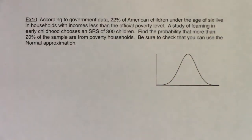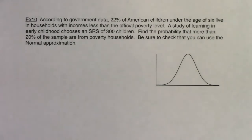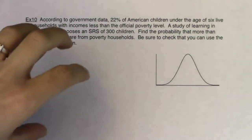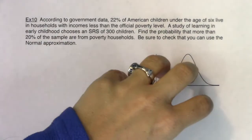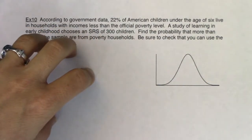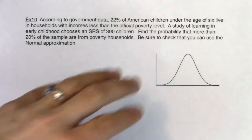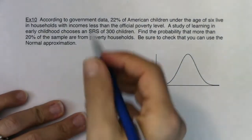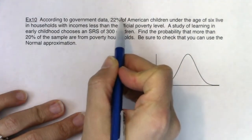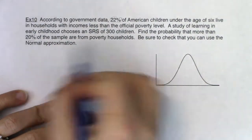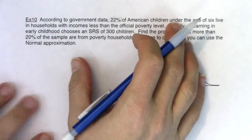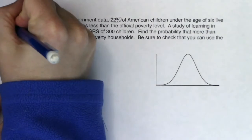A couple of things I want to point out. If I was trying to figure out if I was in mean or proportion land, one of the ways to do that is to figure out what your variable is and decide: is it numerical or categorical? If it's numerical, you're in mean land. If it's categorical, you're in proportion land. But another giveaway here is these two numbers — you see these two percentages. As soon as you see percentages, you know you're going to be in proportion land.